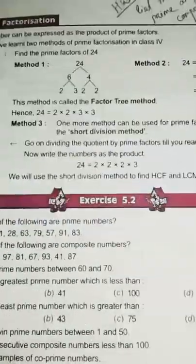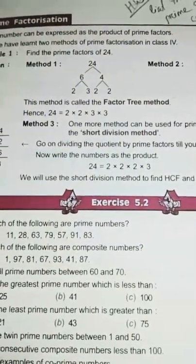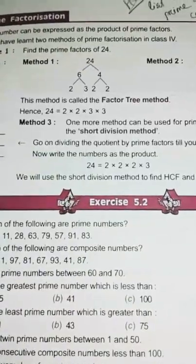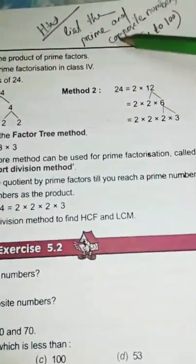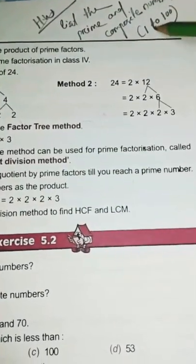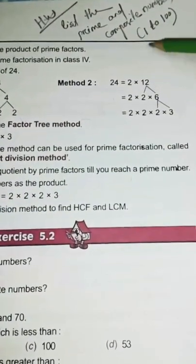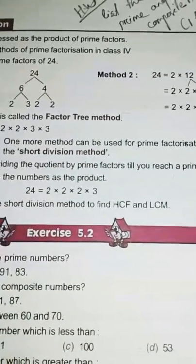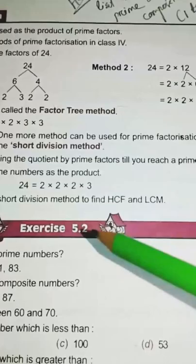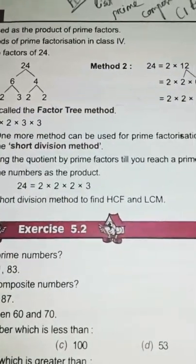So, children, whatever I taught you, again you read properly at your home. And your homework is list the prime and composite numbers 1 to 100. You write in your copy. Next video, we will discuss about exercise 5.2. Thank you.